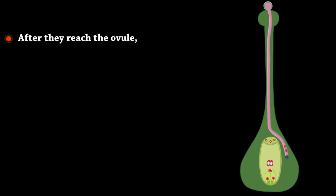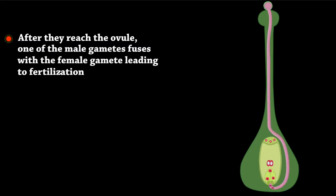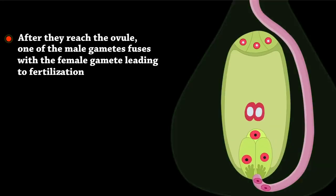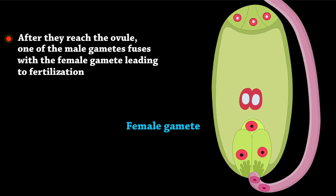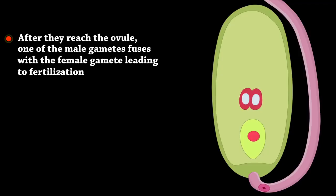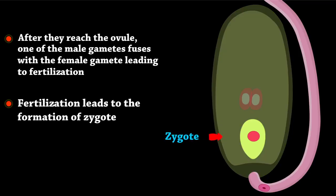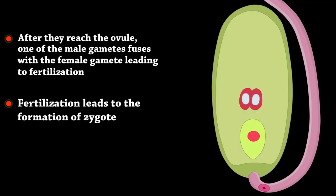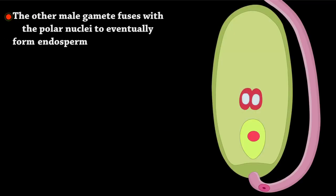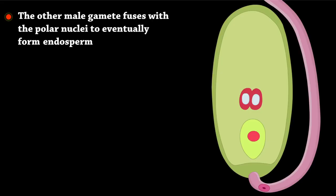After they reach the ovule, one of the male gametes fuses with the female gamete, leading to fertilization. Fertilization leads to the formation of a zygote. The other male gamete fuses with the polar nuclei to eventually form endosperm.